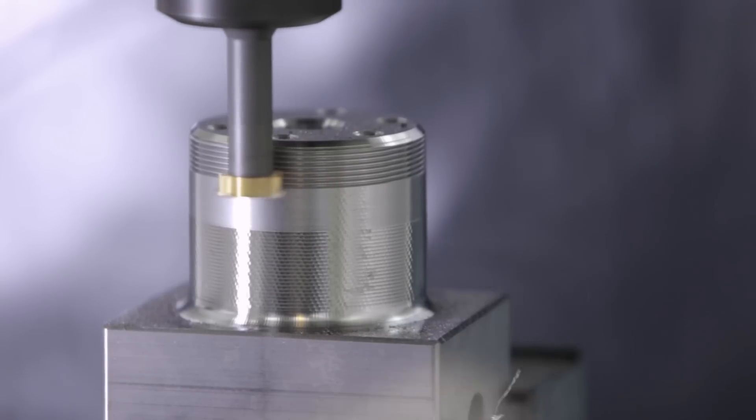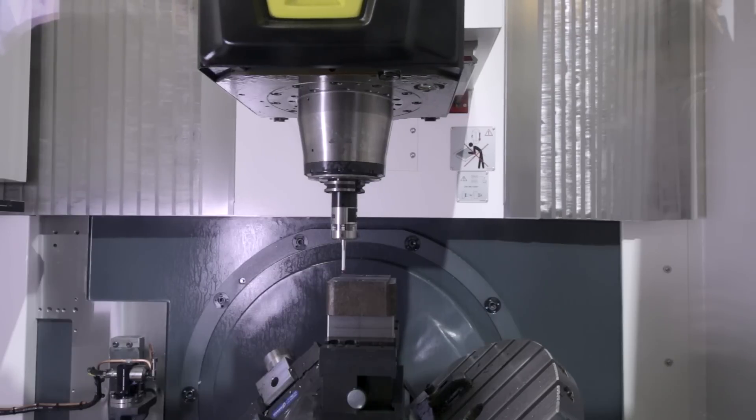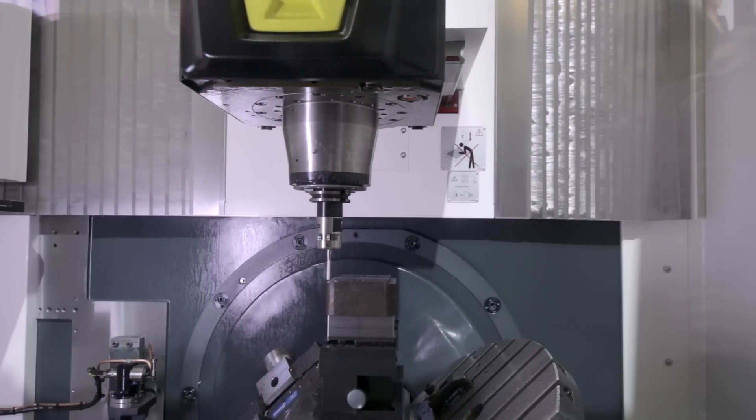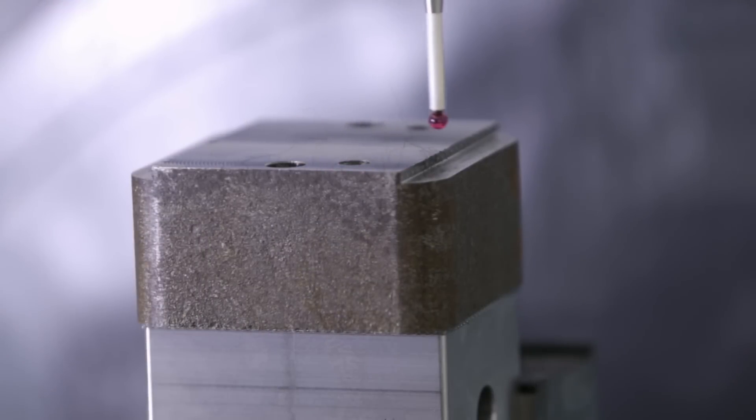We are in an environment where customers are really demanding on accuracy, so this machine has a possibility of direct scales in X, Y, and Z. We have direct measuring scales in the table, so that means every angle you tilt, you don't have a positioning error and you can work in the most accurate way with this machine.